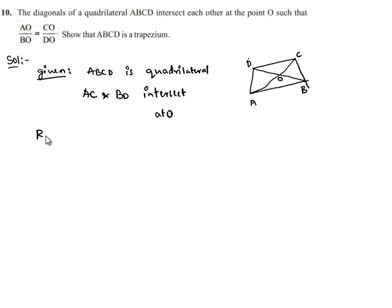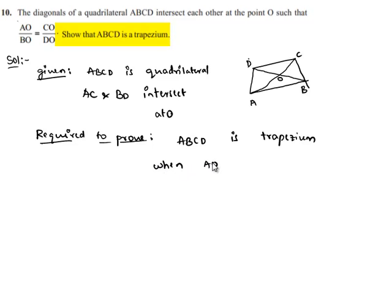Here we are required to prove that ABCD is trapezium when AO by BO is equal to CO by DO.